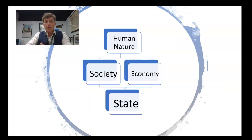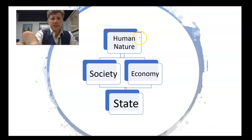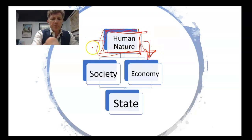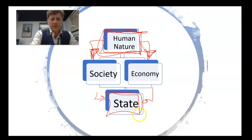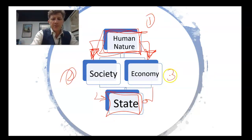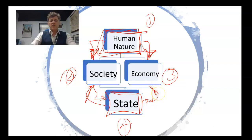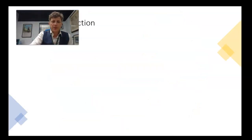So on with conservatism. Throughout all of these videos we're going to start off by looking at human nature, because whatever you think about human nature is going to define the shape of your economy and your society. And the shape of your economy and society is going to determine in turn what you expect of the state. So we're going to look at human nature first, society second, the economy third, and the fourth will be the state and how it manages society and the economy. As we go through all of these ideologies, we're going to stick to this same regime. So let's start off with human imperfection.